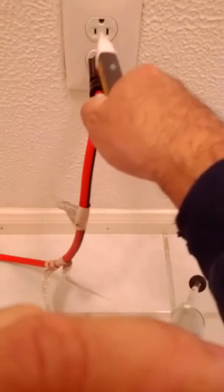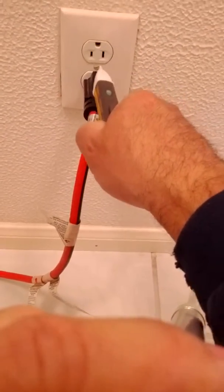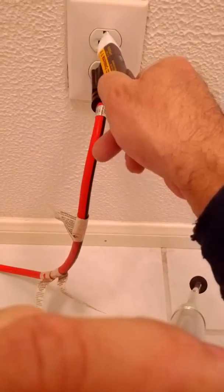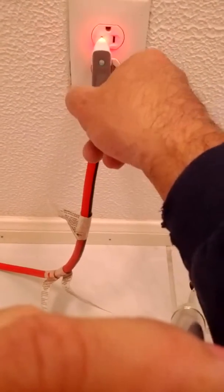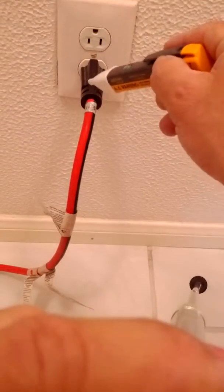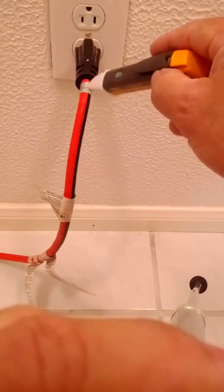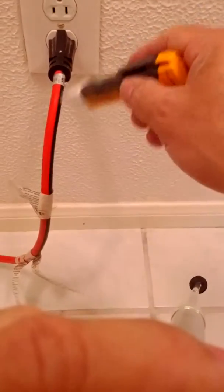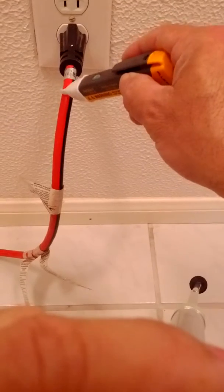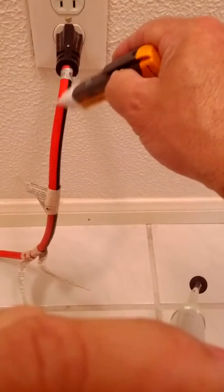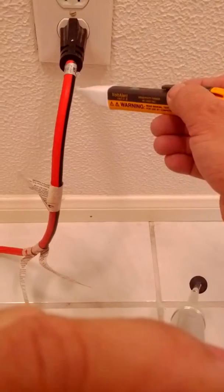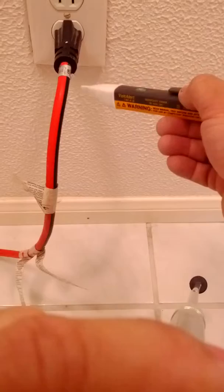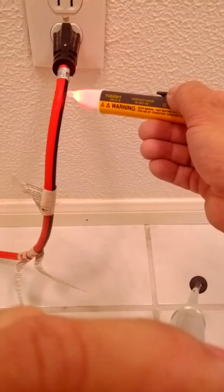There's electricity, voltage going through there. You stick it through the neutral, nothing. Ground, nothing. The hot, yeah. And what's good about this is it also does wires that are coming out. So if you want to test a wire for example, you can put it on here and think okay, there's no power going through there.